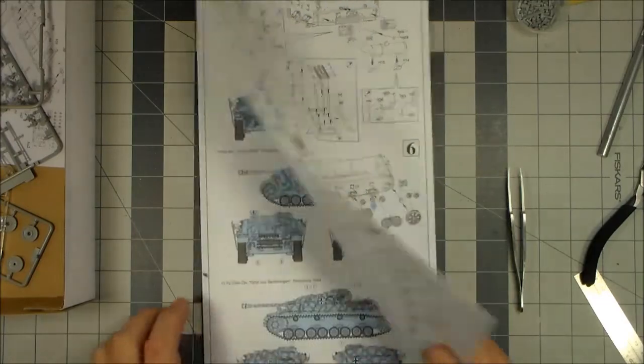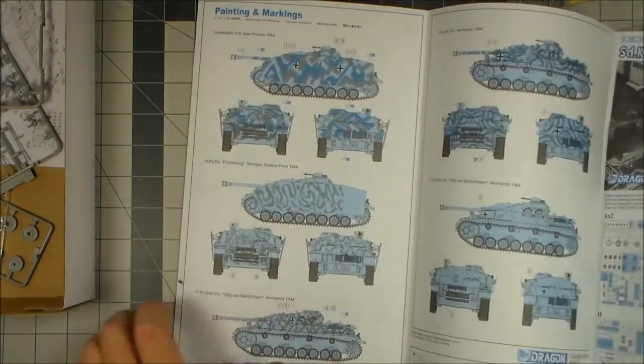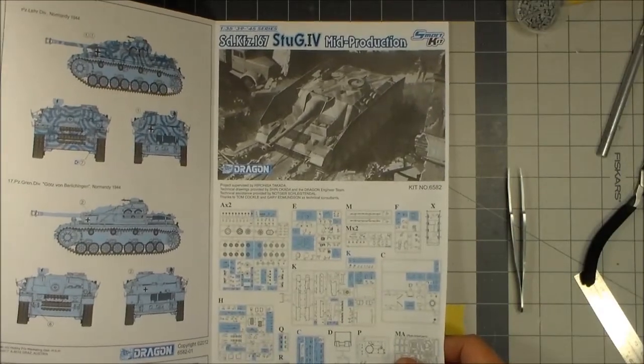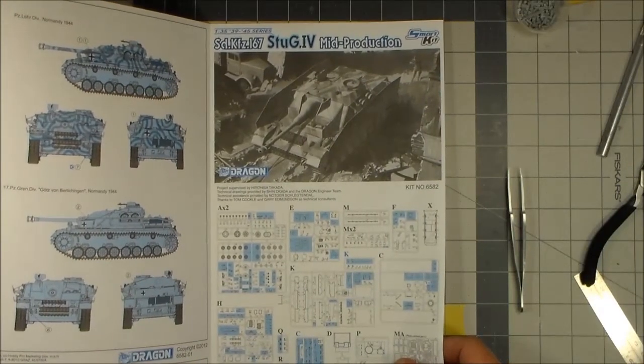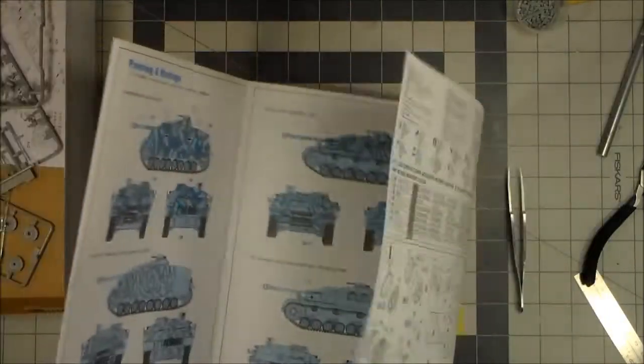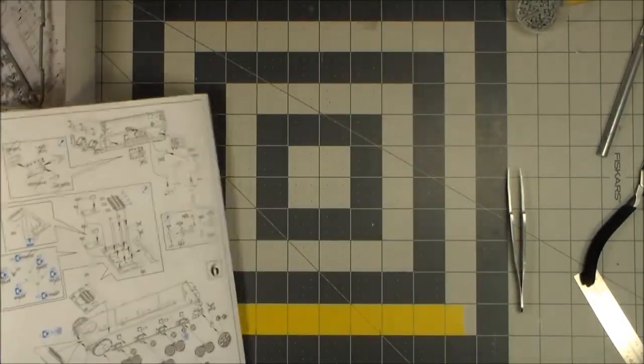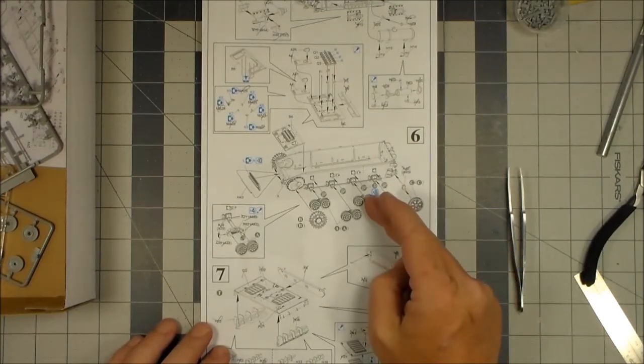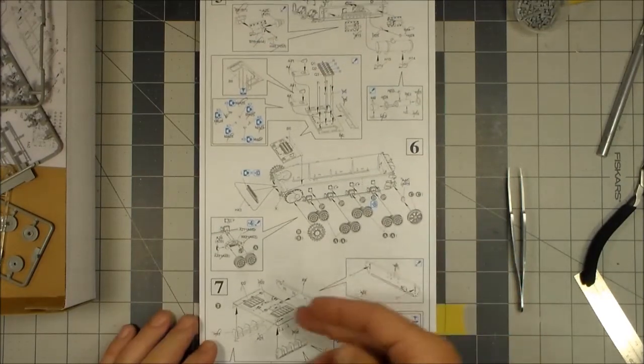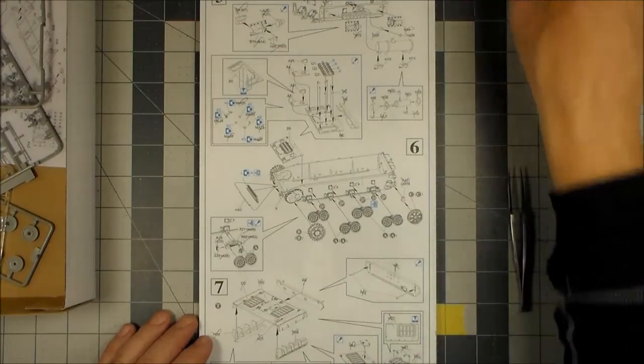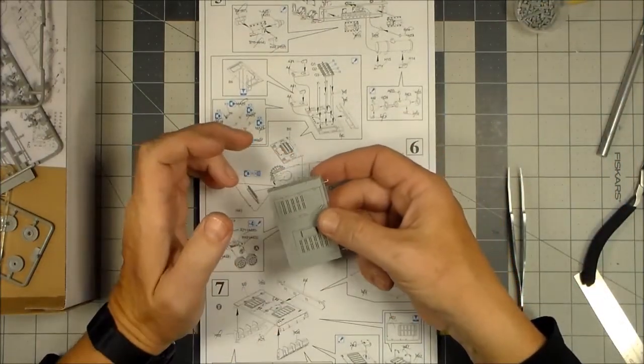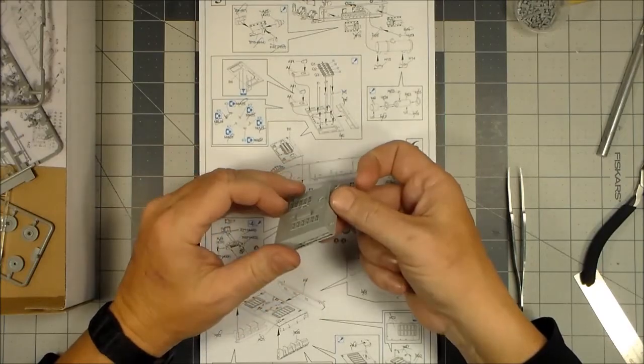The kit, as you hopefully remember, is the SDKFZ-167 Stu-4 Mid-Production Smart Kit by Dragon. And on the last episode, I had left off at step six. So I've done step seven, which is the engine deck that's all assembled and ready to go.